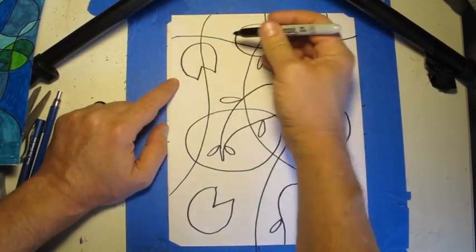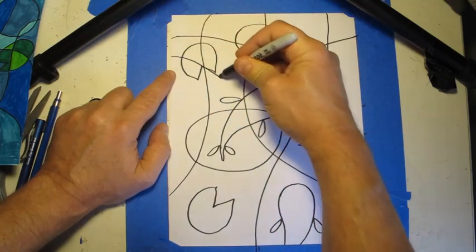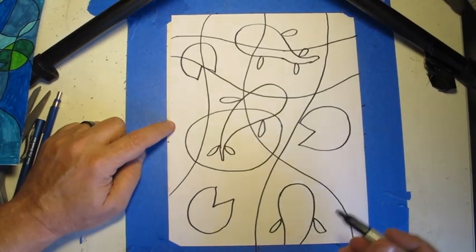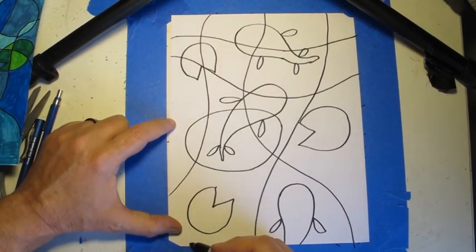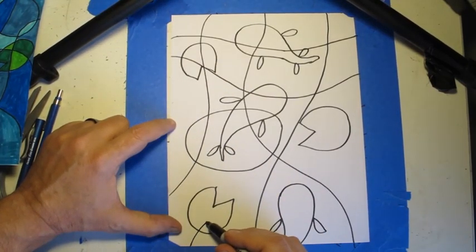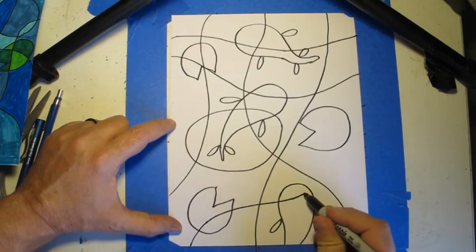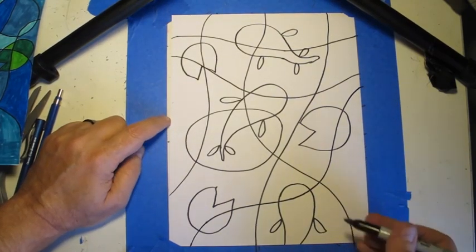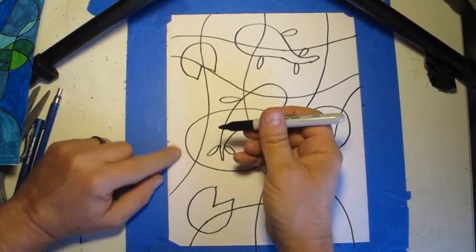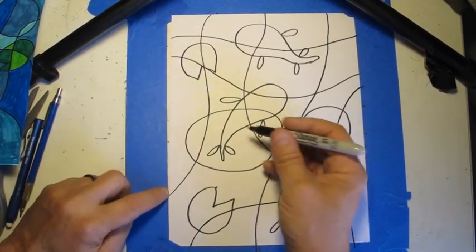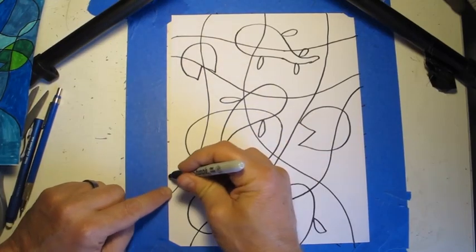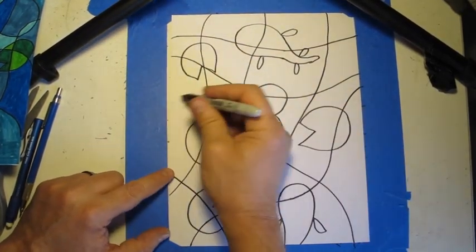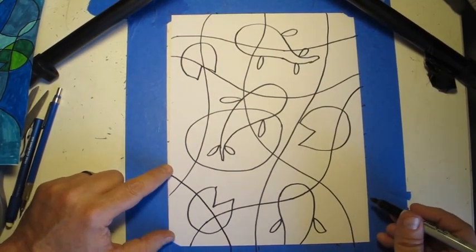Because we're going to use these extra spaces to add color. Each one of these little individual spaces that we're creating is going to have its own color. And you'll be repeating some colors, but you're going to be making a lot of spaces. So we have a lot of different areas of color.